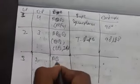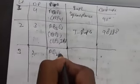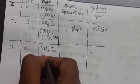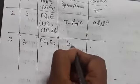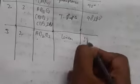With three lone pairs and two bond pairs, the molecule type is AB2E3 and the shape is linear with a bond angle of 180°. Examples include XeF2 and similar molecules.